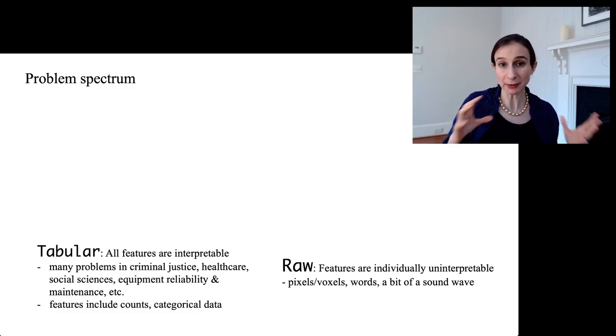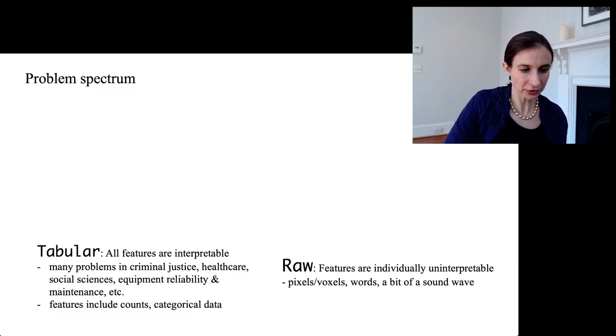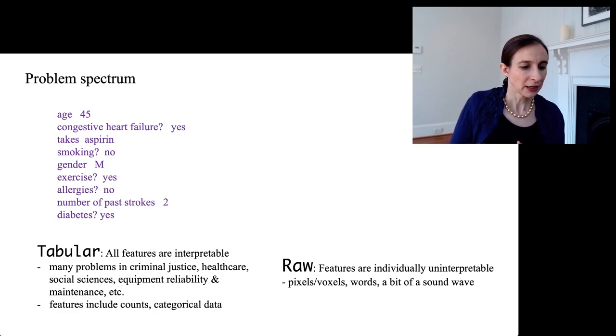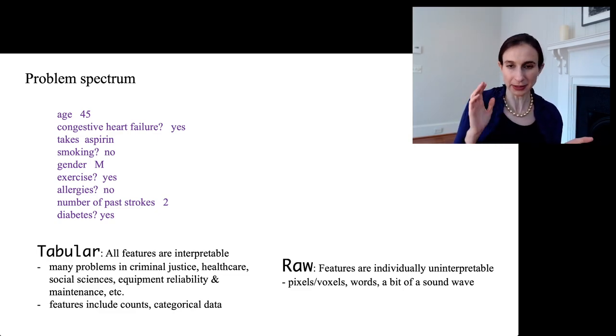So I think that there's a spectrum of problems, and on one extreme of the spectrum are tabular data and the other stream are what I call raw data. So tabular data is where all the features are interpretable. So the data looks kind of like that, and these are features that are counts or kind of categorical data or something like that. Now most of the problems that I work with have data like this. So these are many different problems in criminal justice, in healthcare, in the social sciences. I usually end up with data like that.